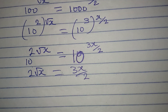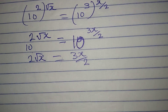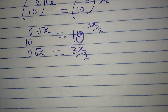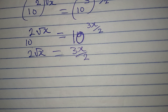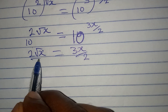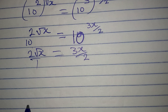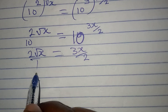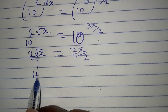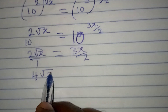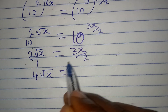From here I can simply cross multiply — because this is over 1 as well — so we will have 2 times 2 root X, giving us 4 root X, equal to 3X times 1, which is 3X.